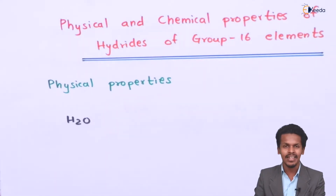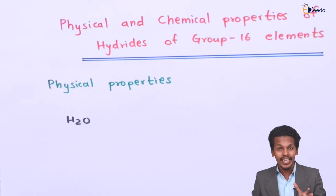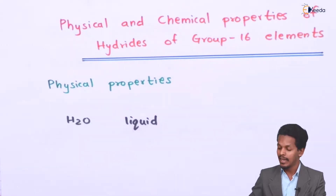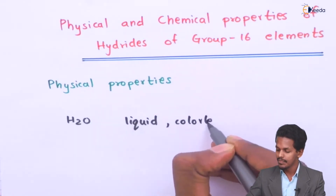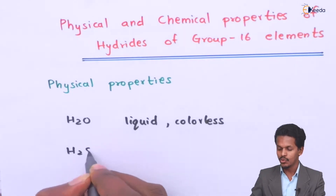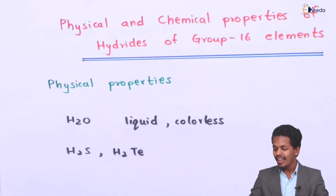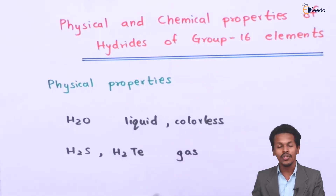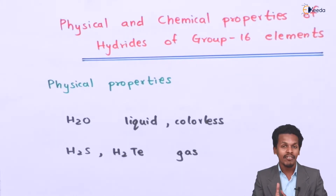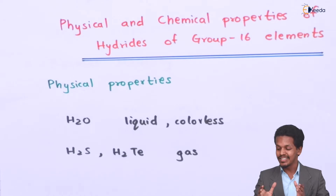Suppose if I am comparing H2O with other hydrates like H2S, H2Se, or H2Te. In that case we will get to know that H2O is the only hydrate above all those which is present in a liquid state. It is colourless and not harmful. But the other hydrates like H2S or H2Po are gaseous molecules and they can be hazardous or poisonous. That is the reason water, being a hydride of oxygen, is comparatively very different compared to the other hydrates of group 16 elements. That is the physical property.